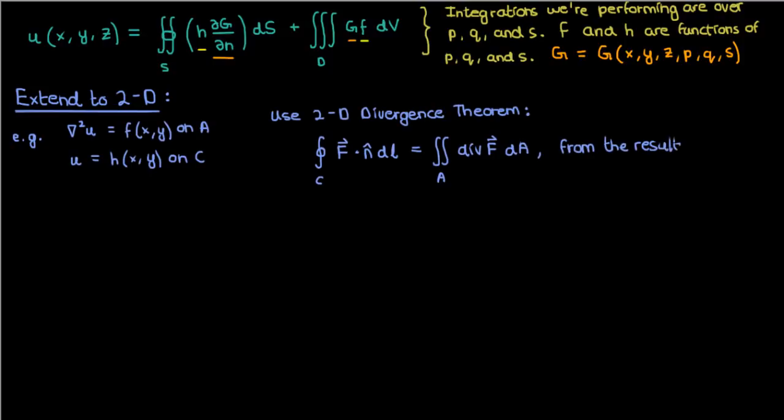And then we could use this 2D divergence theorem to come up with the Green's identities in two dimensions, and then we could apply those identities to say that the solution u of x, y to this PDE in two dimensions is the integral over C of h times partial capital G partial n dL plus the double integral over A of capital G times f dA.